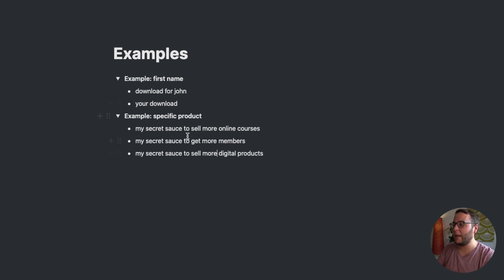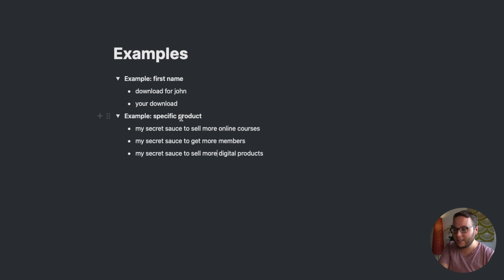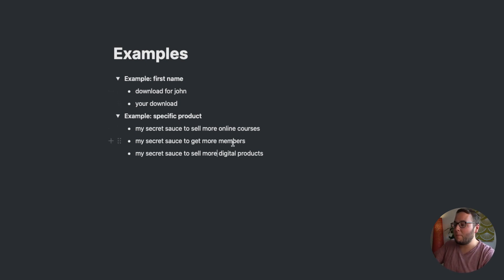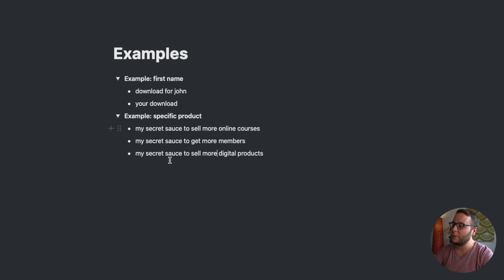Another example is based on a segmentation group inside ActiveCampaign. I created a custom field where I ask people what kind of digital products they're selling. If somebody says they sell online courses, I store 'online course' in that custom field. If they have a membership site, I store 'membership site.' Then I can change my subject line based on what that person is selling.